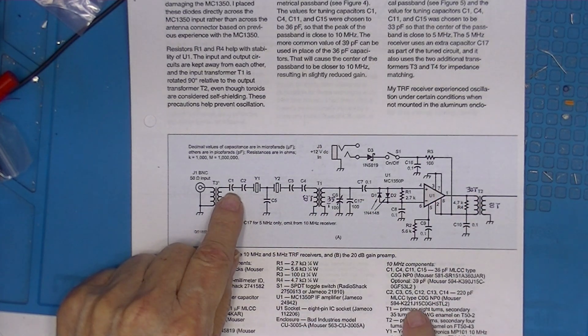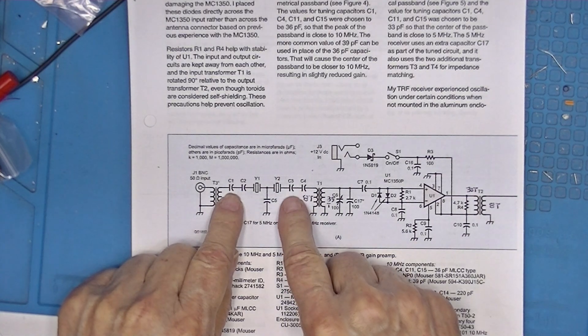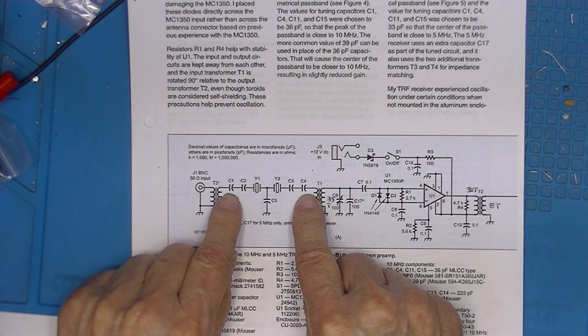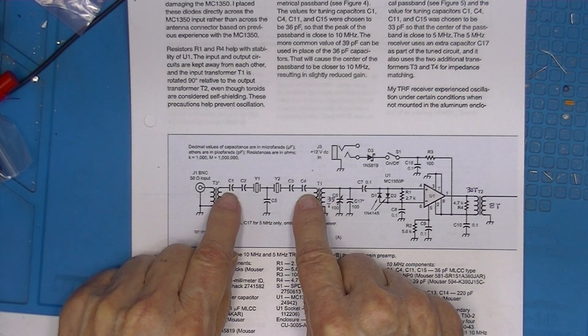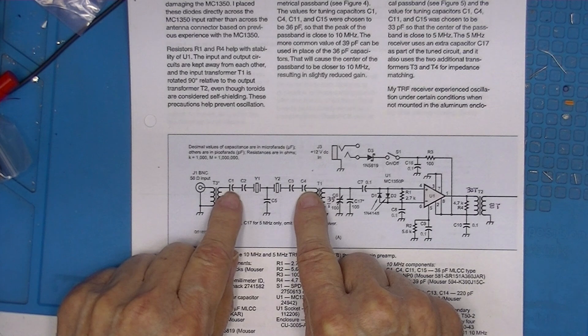Currently they are 36 picofarad, these two, C1 and C4. And they appear to be determining the bandpass and the bandpass shape.